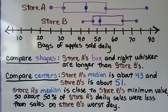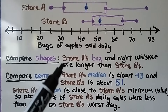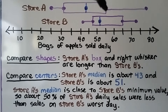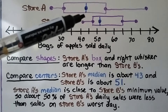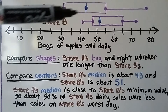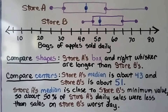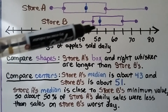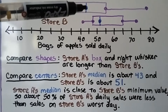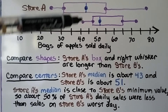We can compare their shapes. Store A's box and right whiskers are longer than store B's — look at how much longer this is than for store B. We can compare their centers, their medians. Store A's median is about 43, and store B's median is about 51. Store A's median is close to store B's minimum value.